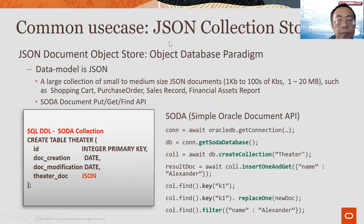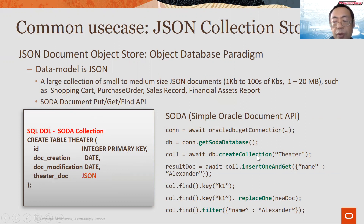The primary use case is JSON collection store. It follows the object database paradigm. The data model is JSON — a large collection of small to medium-sized JSON documents stored in a table with ID columns and JSON type columns, which is where all the JSON documents get stored. The user interface is the Simple Oracle Document API, where users can get a SODA collection, create a SODA collection, and insert and retrieve JSON documents into the SODA collection.